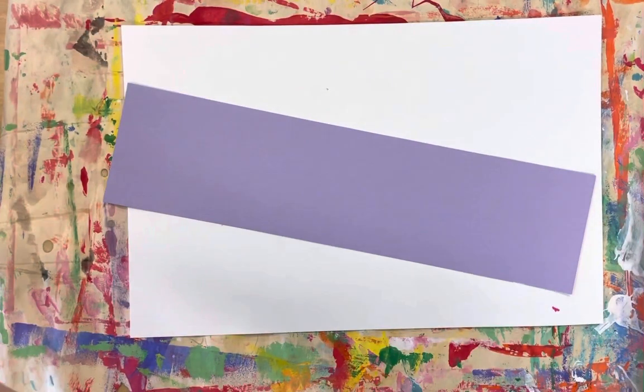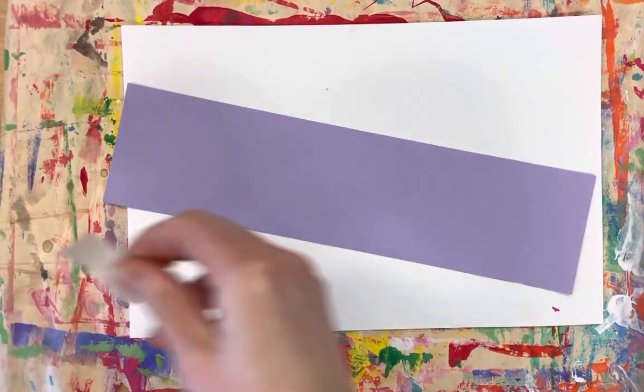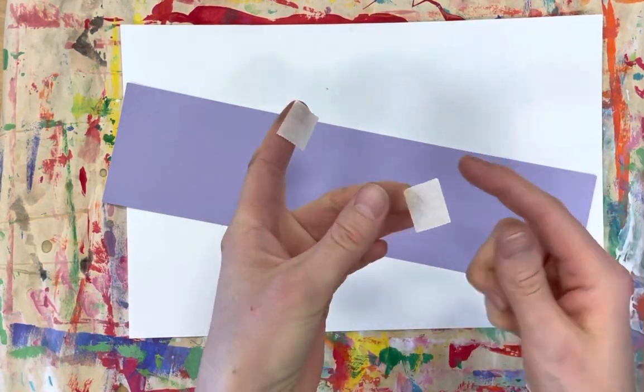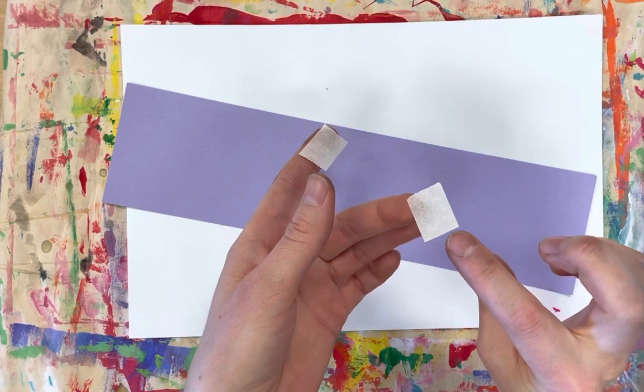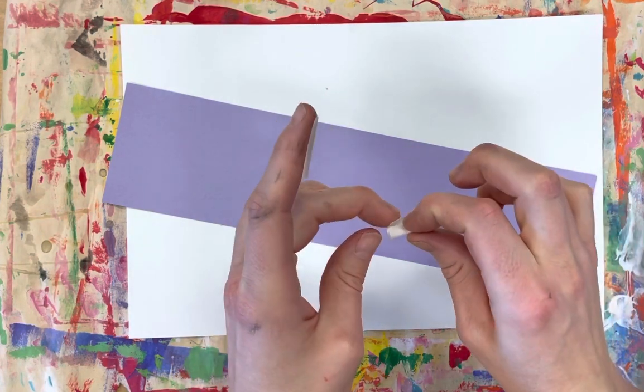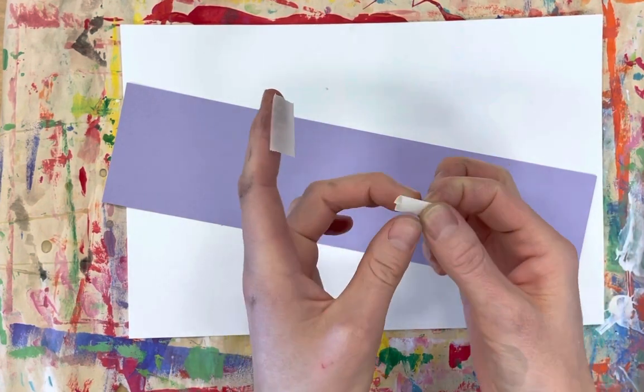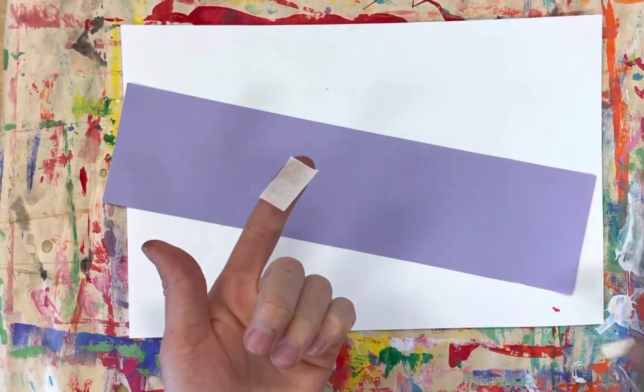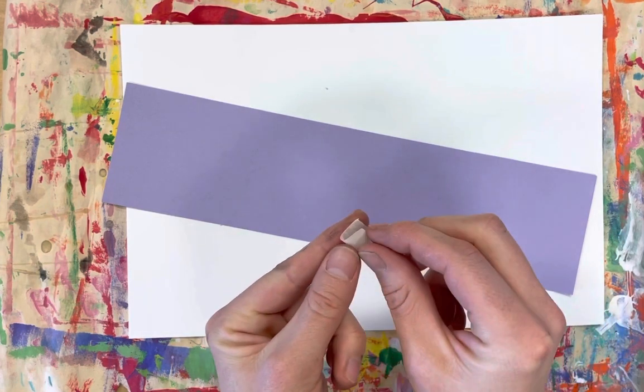We're going to use tape torn into small pieces. When the sticky side is on the outside, create a small tape loop to put to the back of your torn pieces.